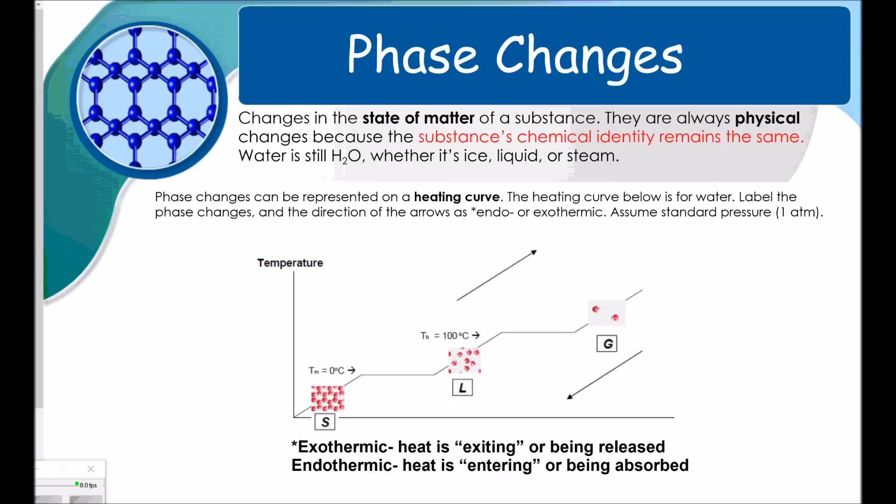In this class, we're going to emphasize phase changes. They're changes in the state of matter of a substance. These are always physical changes because the substance's chemical identity remains the same. For example, water is still H2O whether it's ice, liquid, or steam.